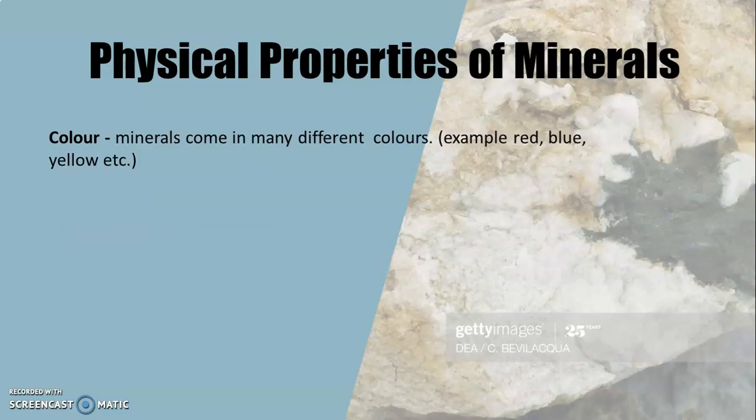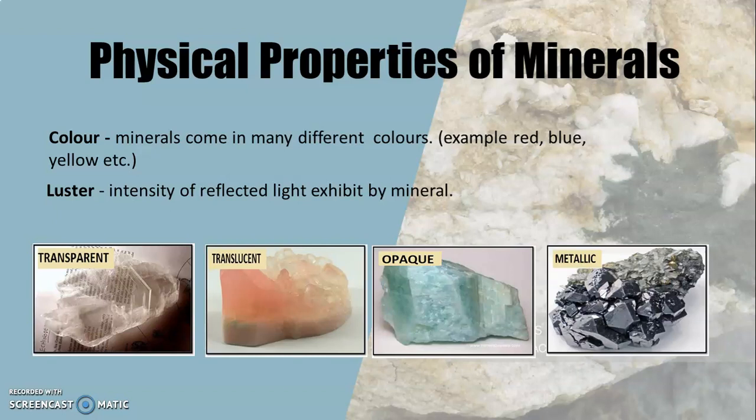The color of minerals comes in many different colors, from red, blue, and yellow. The luster is the intensity of reflected light exhibited by minerals. Take a look at the sample image below. Transparent, translucent, opaque, and metallic are some common examples of luster of minerals.